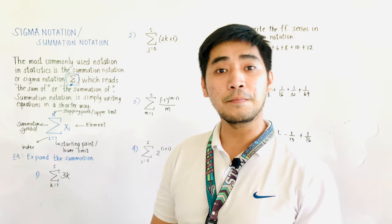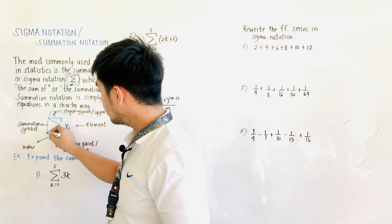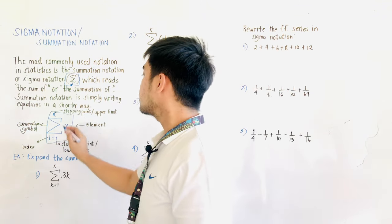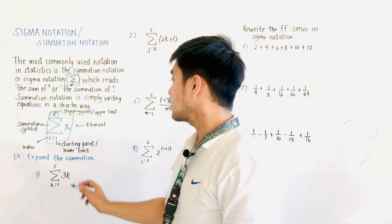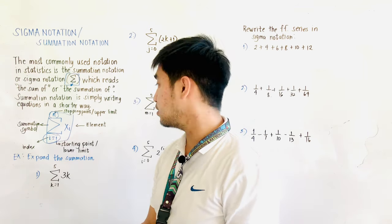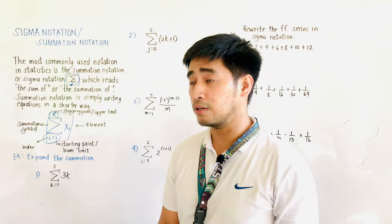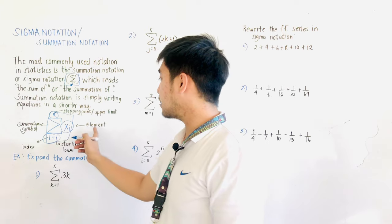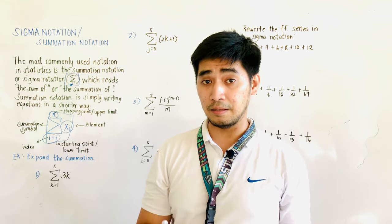So, what are the parts of summation notation? We have the symbol sigma. The letter at the top is the stopping point or the upper limit. The index or initial value is i, where i is equal to 1 — that is the starting point or lower limit. The value x sub i is called the element, and we could use any letter to represent the element.